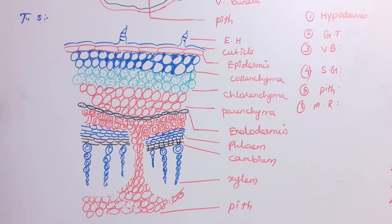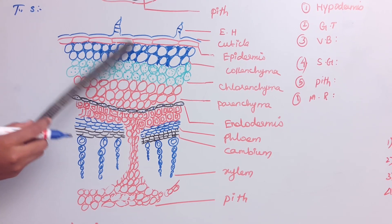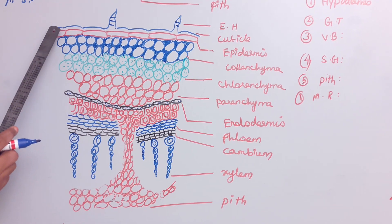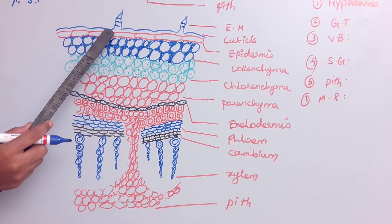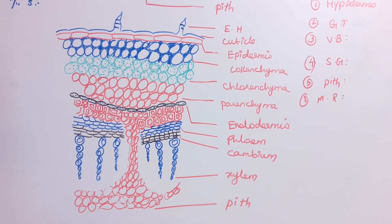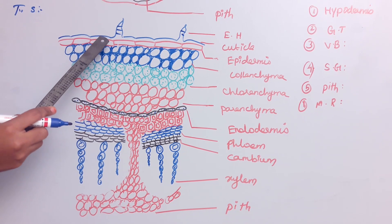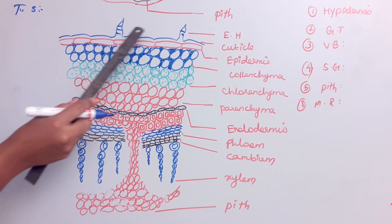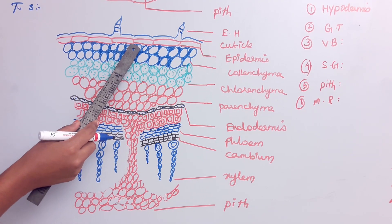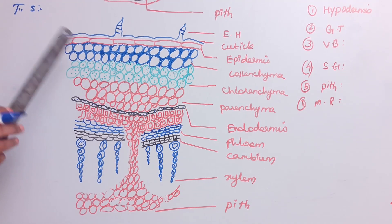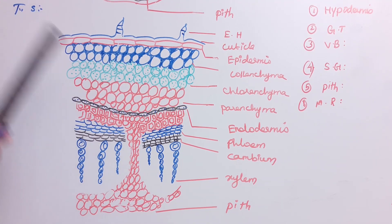The epidermis is protective — just like our skin is very protective. This epidermis is covered by cuticles. The cuticle controls water evaporation. There is also epidermal hair, which is present mostly in the dicot stem and is absent in the monocot stem.